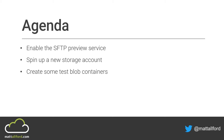From there, we'll create some test blob containers. With the SFTP service, the container of the blob service is where you set the permissions and the boundaries for the users. We'll set up a couple of containers, then create a test user using both password authentication and SSH key authentication methods, test connectivity, upload and download some files — basic FTP stuff.